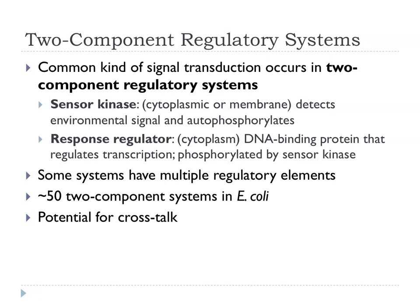There is potential for crosstalk between two-component systems. A given sensor kinase may generally phosphorylate its cognate response regulator — maybe 90% of its activity — but maybe 10% is regulating another. Again, this is one of those complex issues that's really amenable to modelling. There are about 50 of these systems in E. coli, and there's been a lot of interest in defining what each one does and how much crosstalk exists between them.